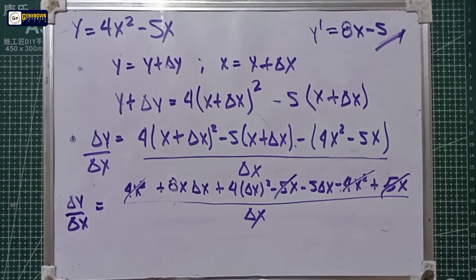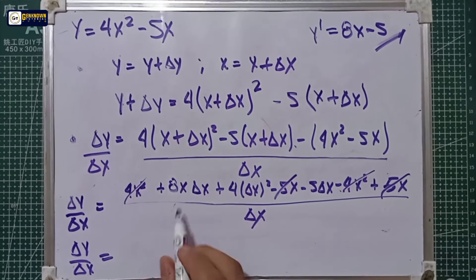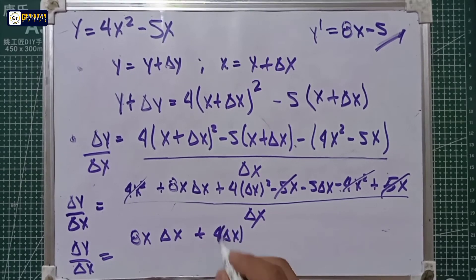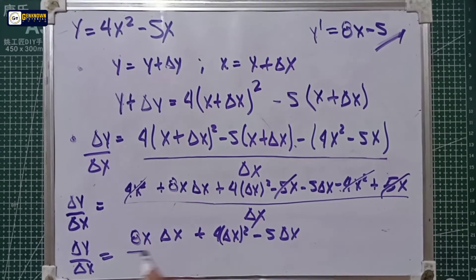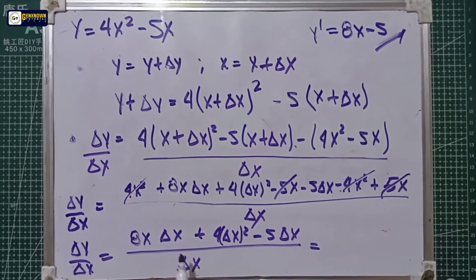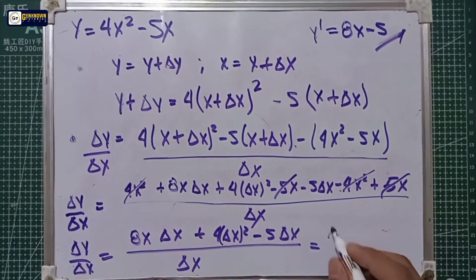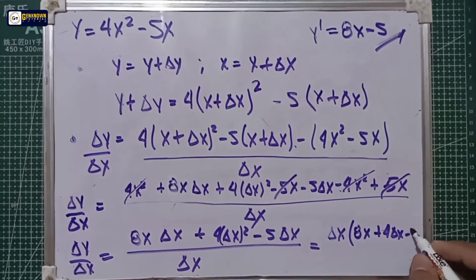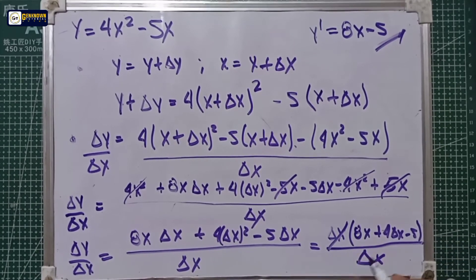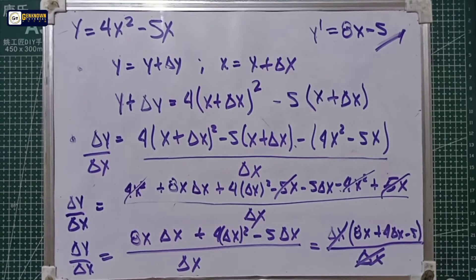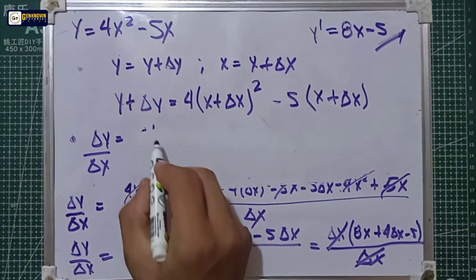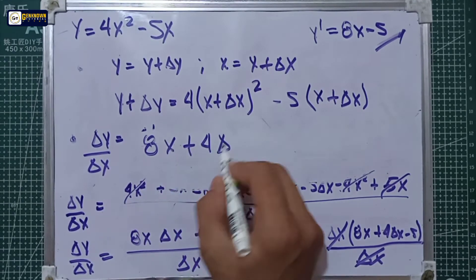So delta y over delta x is equal to 8x·delta x plus 4·delta x squared minus 5·delta x, all over delta x. Factor out delta x from the numerator: delta x times (8x plus 4·delta x minus 5), all over delta x. After cancellation of delta x, delta y over delta x equals 8x plus 4·delta x minus 5.